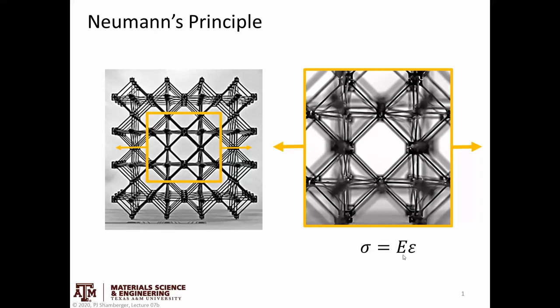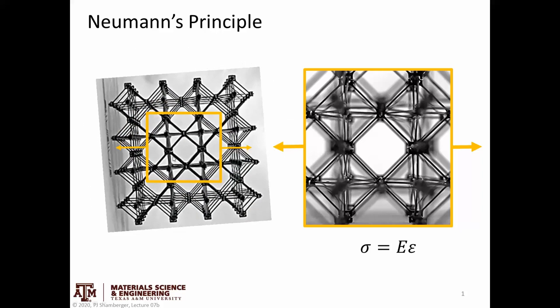If we're in the elastic regime, we know that the stress should be linearly proportional to the resulting strain through a constant that we call the elastic modulus. But because this lattice is cubic, if I pull the thing horizontally, I would expect it to behave the same as if I rotated it and pulled it what was before vertically, but what now is horizontally.